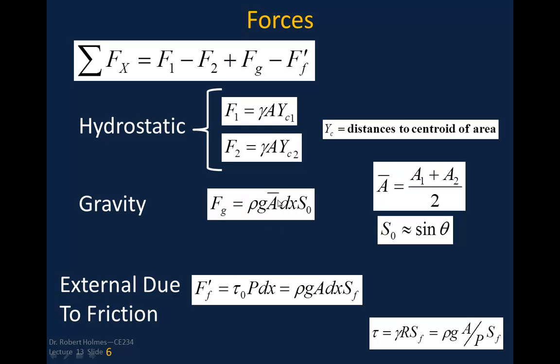We've got the gravity forces, which is basically the volume of the control volume, which is the value of the A prime times dx. That gives you a distance along the, or basically gives you the volume. The rho G is basically the weight per unit volume, and so that gives you the gravity force in the x direction. I think I misspoke a little bit, the A bar dx, that gives you the volume. The unit weight is the rho G, so that gives you a total weight of that control volume. And then we multiply by S sub O, that gives us the component in the x direction.